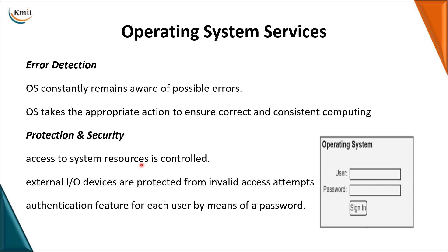The next service is protection and security. When you have multiple processes, these are dealt with in two things. Security means you want only authorized users to access a particular file or system — the basic authentication we use is username and password. You can also provide authentication for a Word document, PPT, or any folder so it can only be opened by a particular user. Protection means when you are executing multiple processes, you don't want one process's data to be modified by another process.